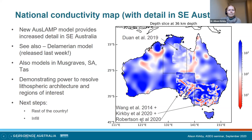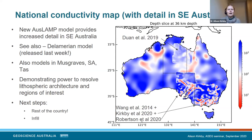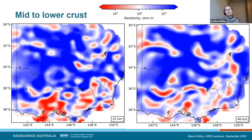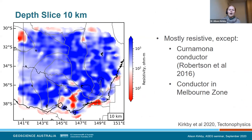Follow-up question: were statics corrected before modelling? No, we didn't do any static corrections. Looking at the 10-kilometre depth slice, I was reassured — there's not much variation across most of it, although there are a couple of exceptions. So I don't think we really needed to, but open to suggestions.